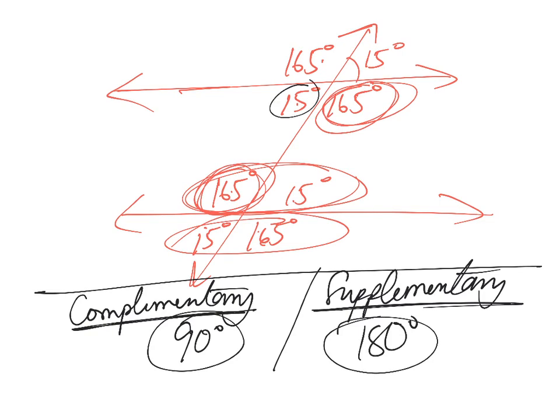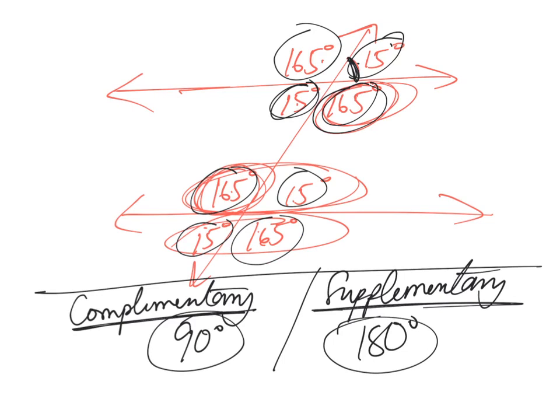By the way, the other way to remember all these angles here is that the smaller one, the smaller angles, the ones that look like they're the smaller one, they're all going to be equal, and the larger ones are all going to be equal as well. So that's a short way to remember this. But complementary and supplementary, 90 and 180. Keep up the good work and have a great day.